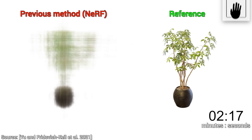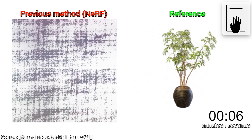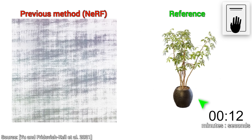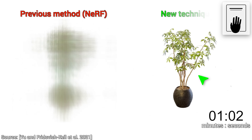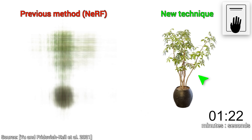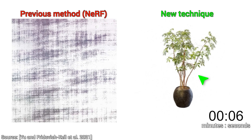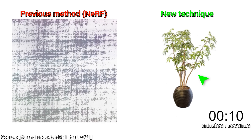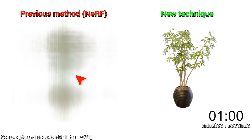Now, hold on to your papers, because here comes the twist. What is the twist? Well, these are not reference results — these are the results from the new technique. Yes, you heard it right, it doesn't require a neural network, and thus trains so quickly that it almost immediately looks like the final result, while the original technique is still unable to produce anything usable.